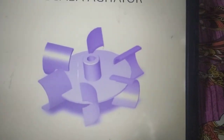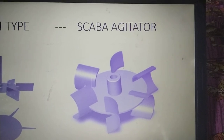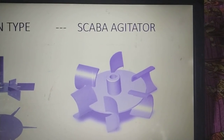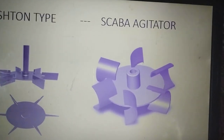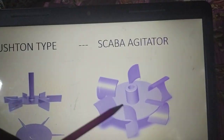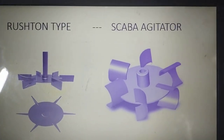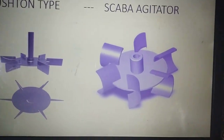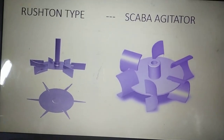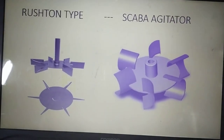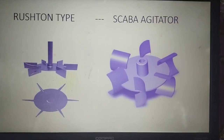Other designs include the Rushton type and the Scaba agitator. Scaba agitators are very strong agitators used for high viscosity medium. The blades are perpendicular to the hub, with some curvature given to the blades — this curvature helps in movement of the liquid medium at different angles. This is an advantage of Scaba agitators, useful for high-viscosity media like xanthan production.